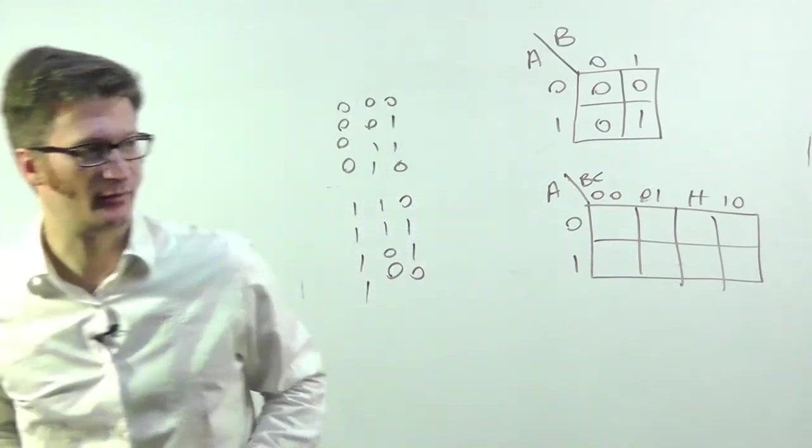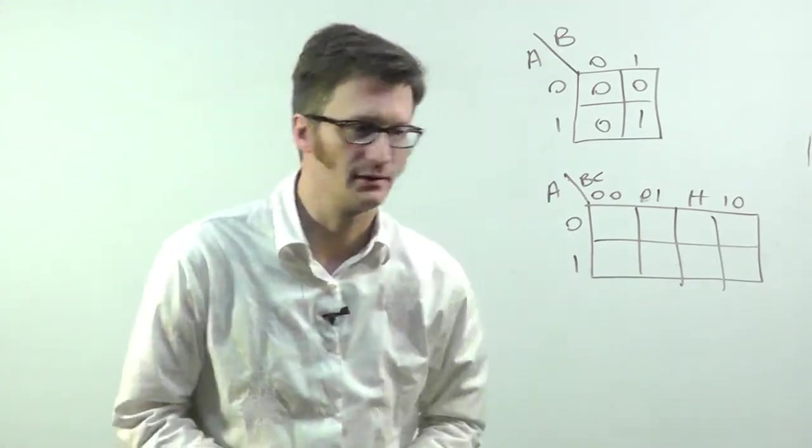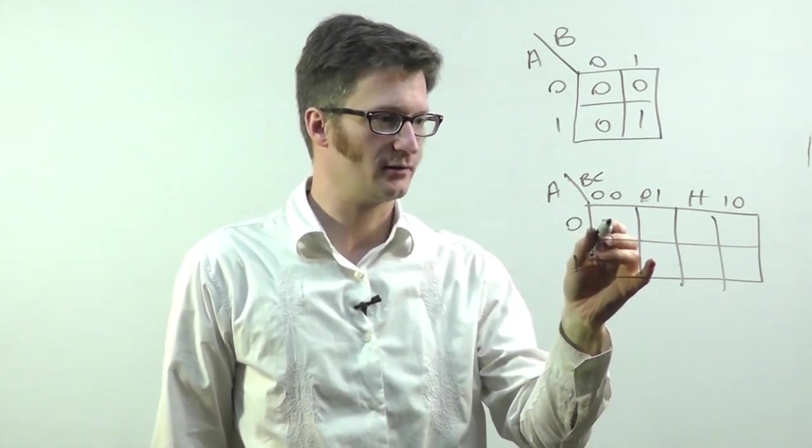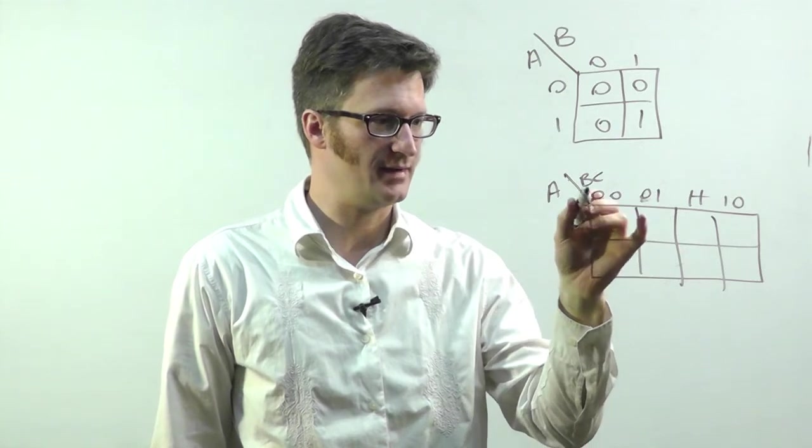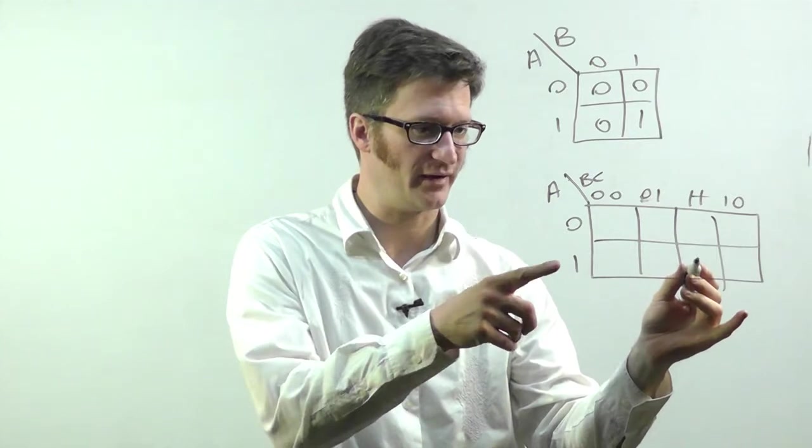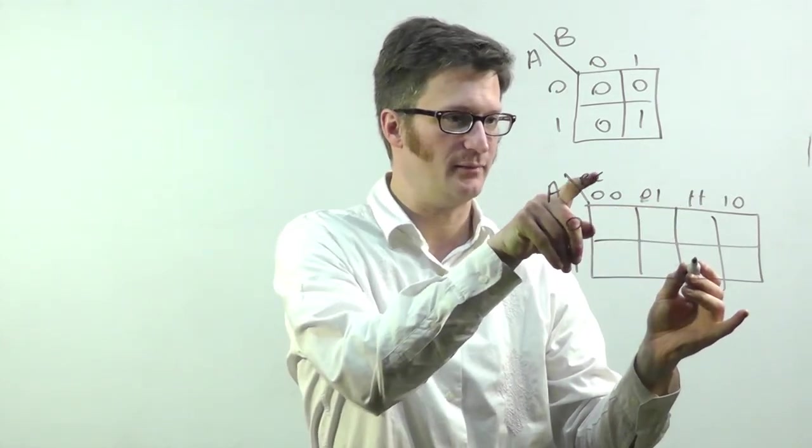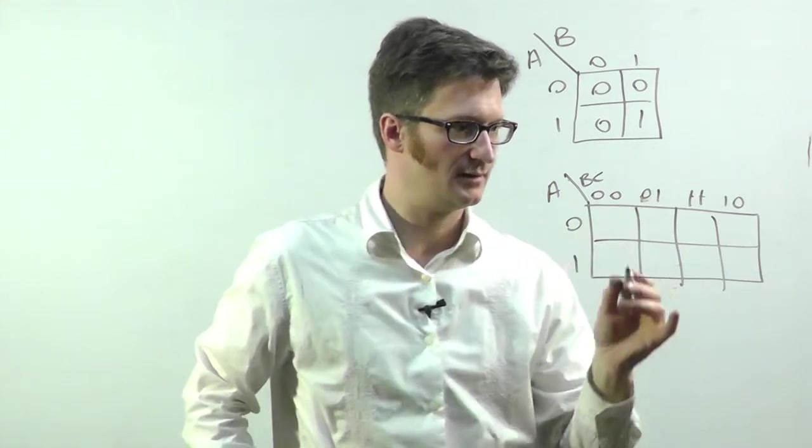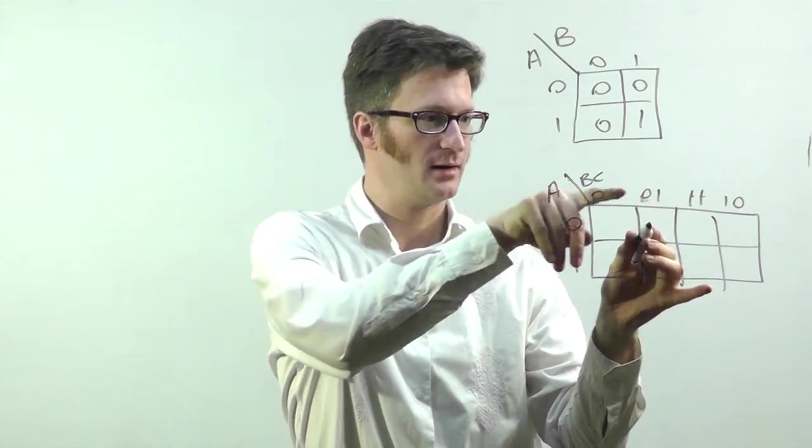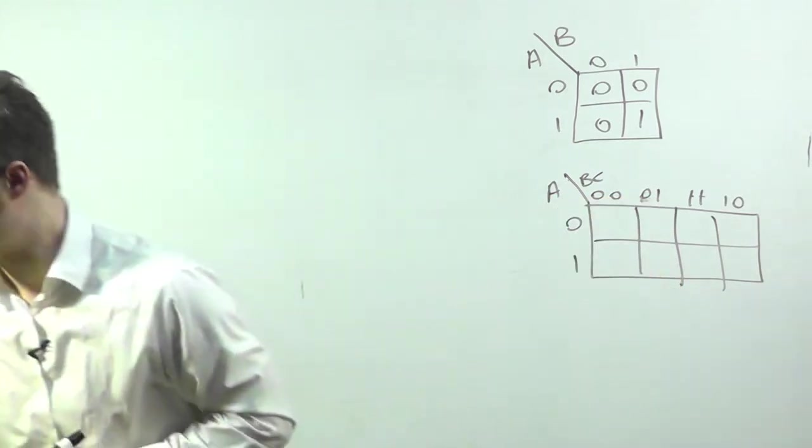Anyway, we're not doing three-bit on this one. This cell right here represents A bar, B bar, C bar. This cell here represents A, and then if we look at it, it's B, C. This one would be A bar, B bar, C.